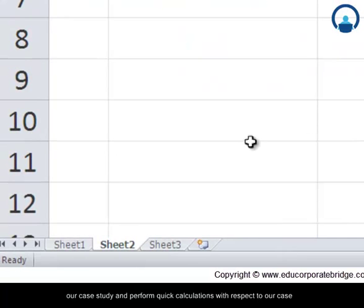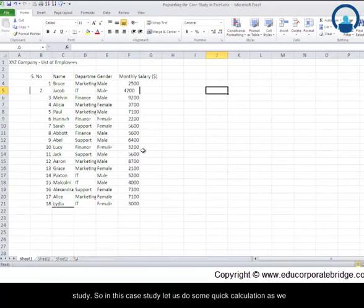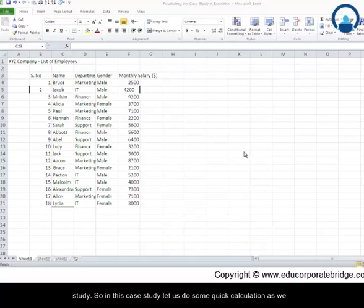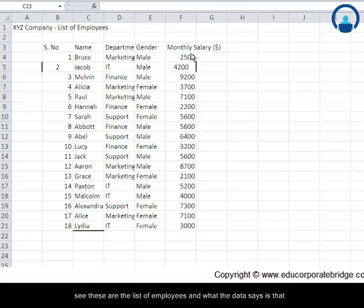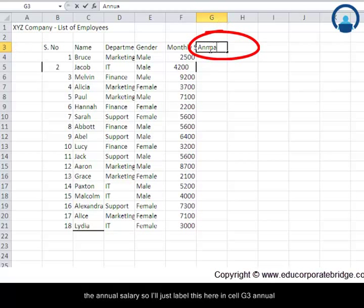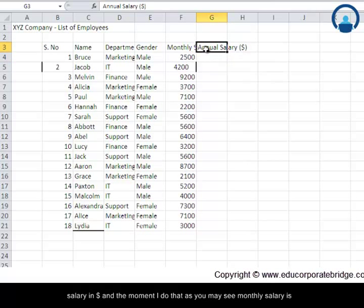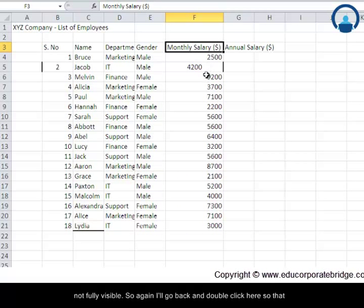Now let us go back to our case study and perform quick calculations. In this case study these are the list of employees and what the data says is that monthly salaries available for each of the employees. So let us calculate the annual salary. I will just label this here in cell G3 annual salary in dollars and the moment I do that monthly salary is not fully visible. So I will go back and double click here so that it is fully visible.